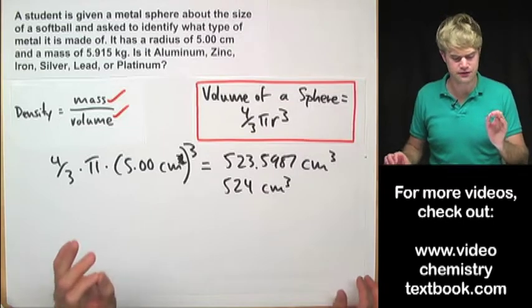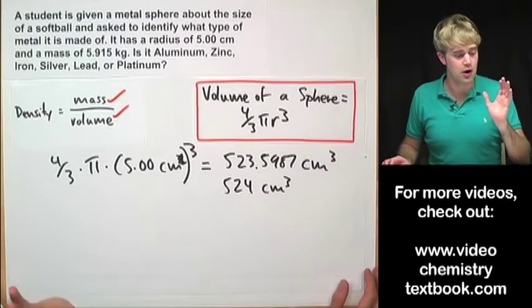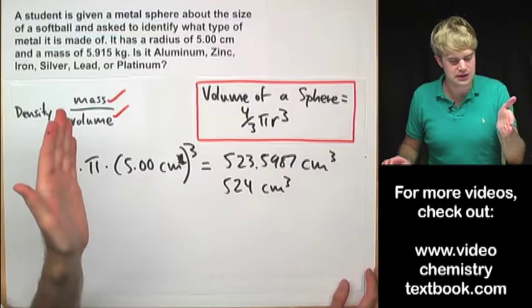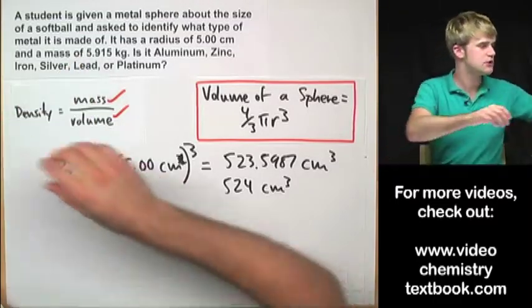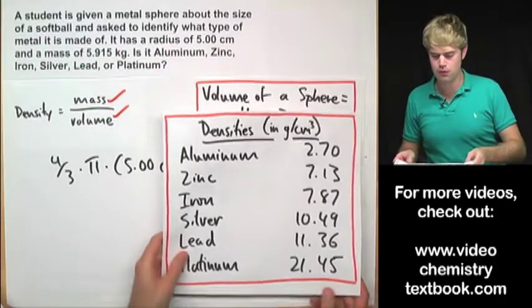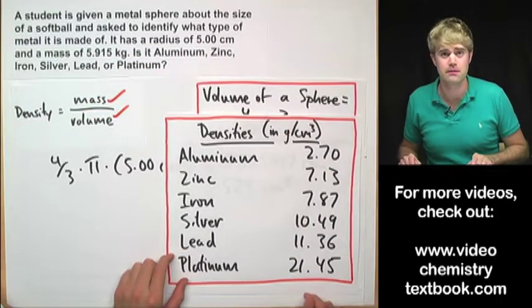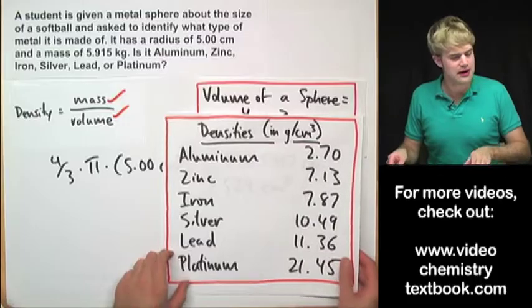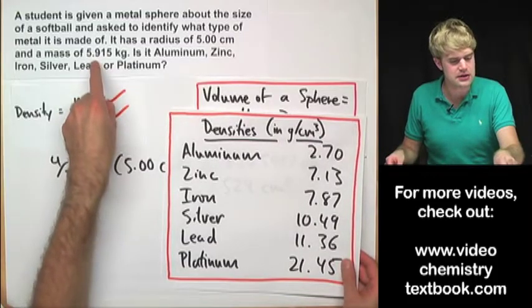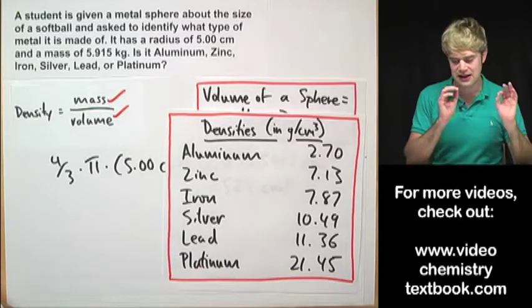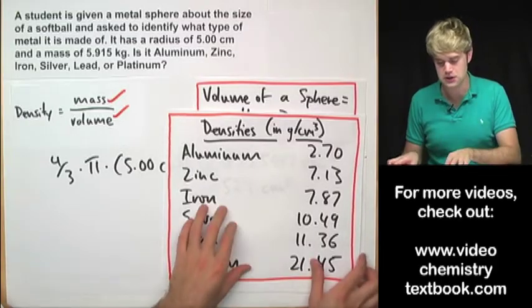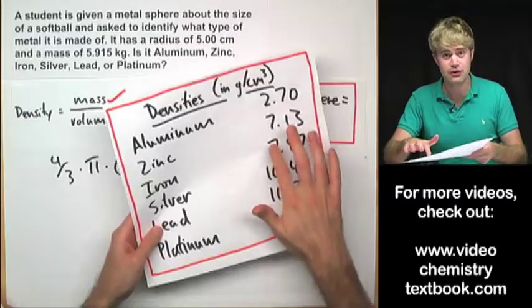Now the next step is to figure out what the density is. So we're going to need to use the mass. Now when we do densities, notice that they are all reported in grams per cubic centimeter. So this mass is in kilograms. So we're going to have to convert the kilograms to grams in order to figure out what the density is.